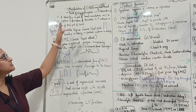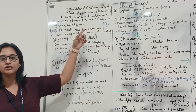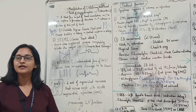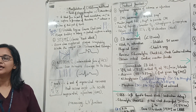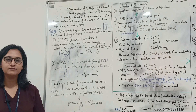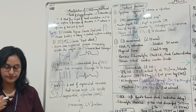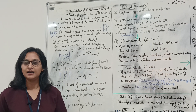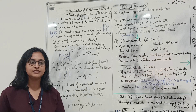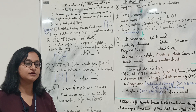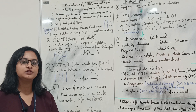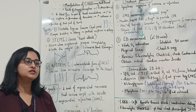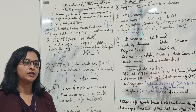ACS is caused as a result of plaque disruption in the coronary arteries. Atherosclerosis is the accumulation of lipids, fibrous elements, and calcification in the large arteries, which results in the narrowing of the arteries and activation of inflammatory pathways.